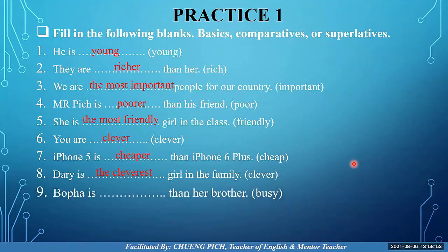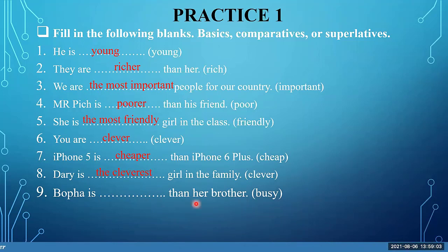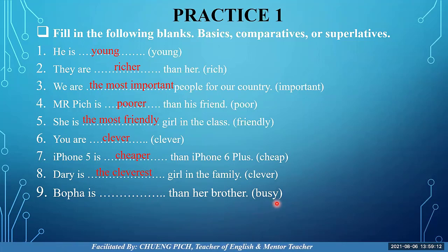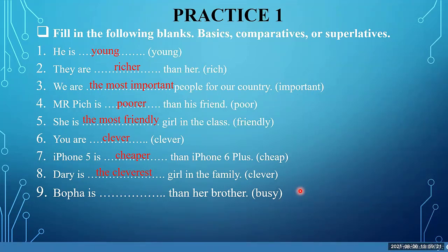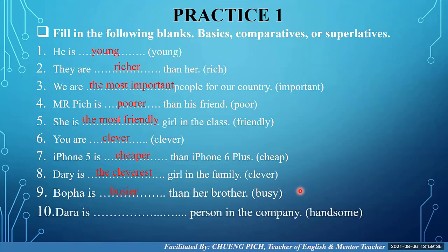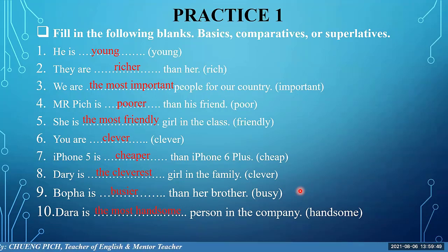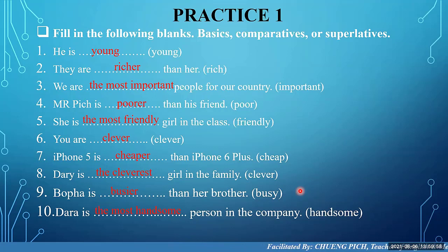Number nine: 'Opa is ___ than his brother' with adjective 'busy' — comparing two people, so comparative. Change 'y' to 'i' and add '-er': 'Opa is busier than his brother.' Number ten: 'Right is the ___ person in the company' with adjective 'handsome' — comparing one person to the whole company staff, so superlative: 'Right is the most handsome person in the company.' That is the end of our practice.